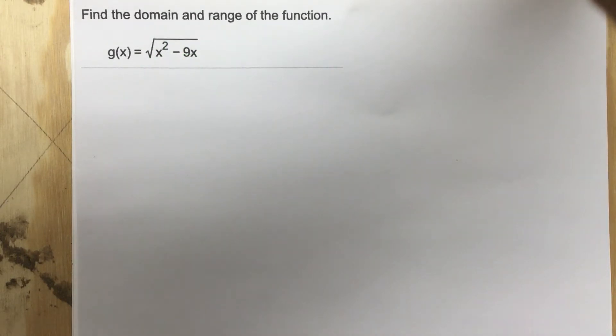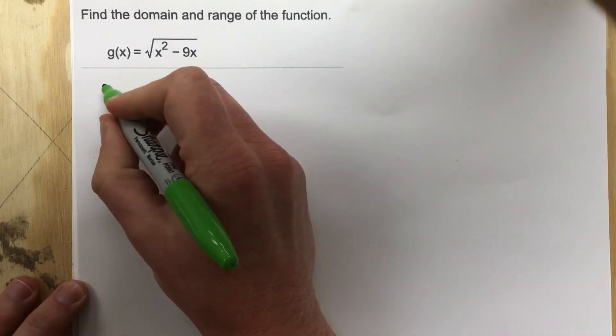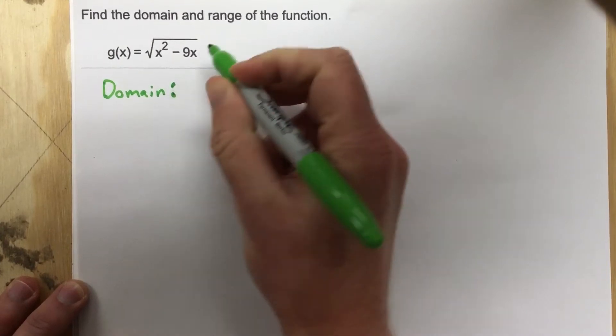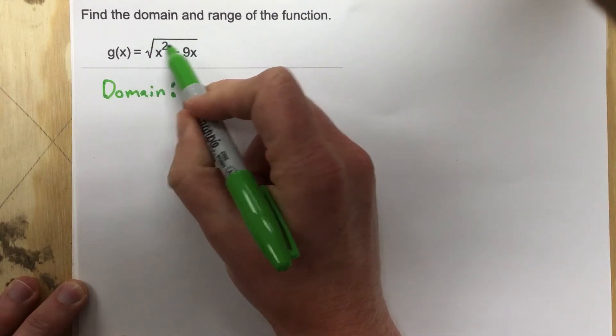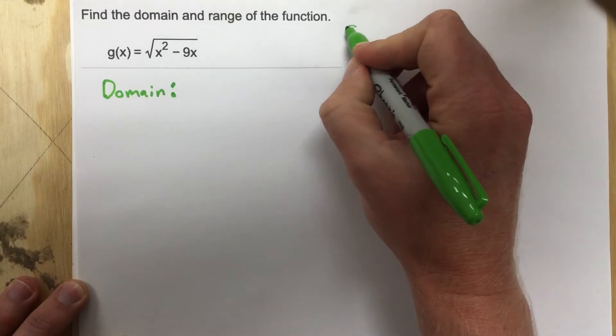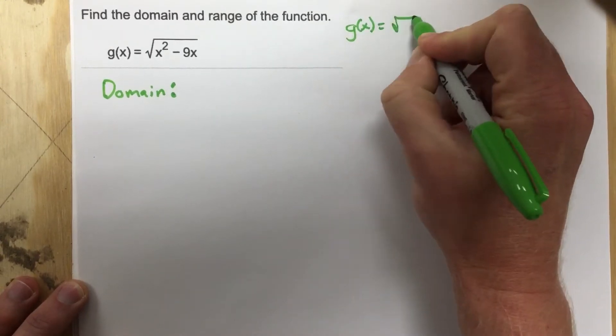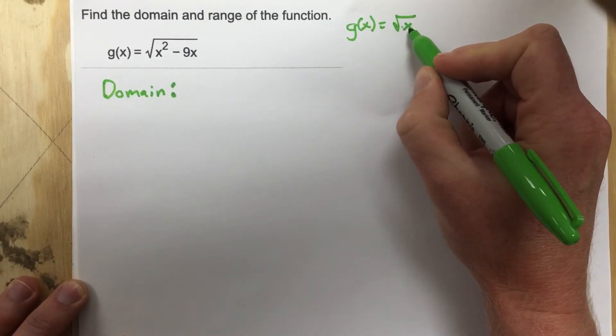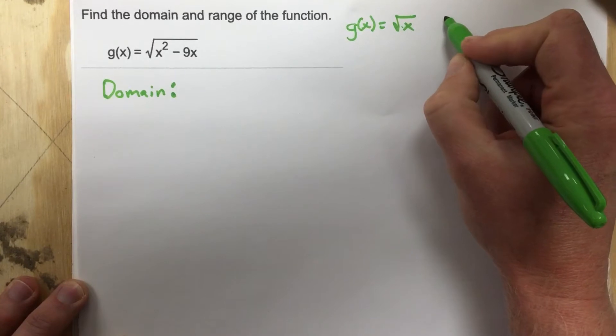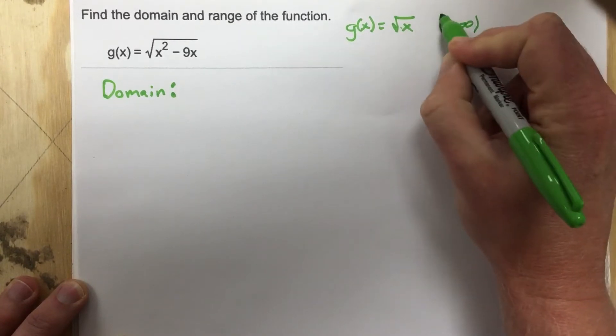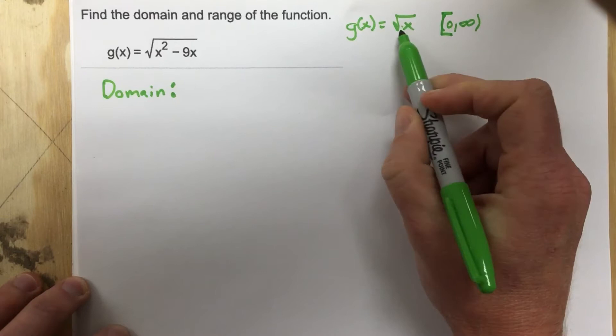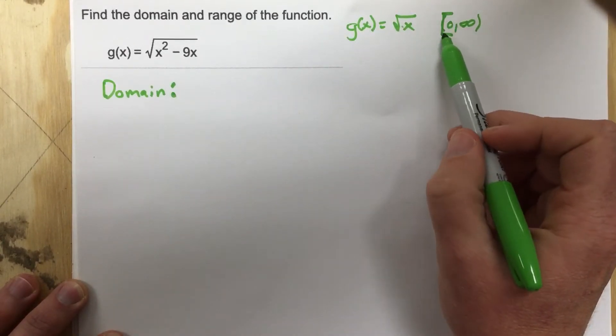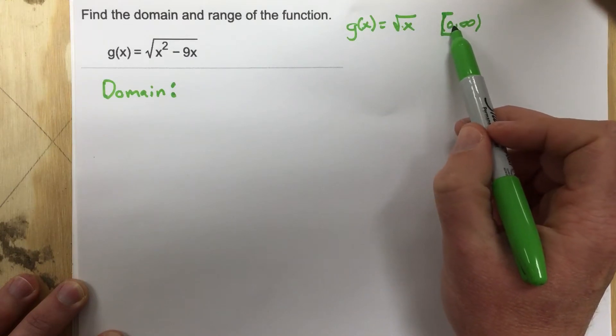If they want us to find the domain we're gonna have to go through and do some solving algebraically to find that. So let's start by talking about the domain of just a normal radical function. So if I have just g of x equal root x, the domain for that function, well I can never take the radical of a negative, so the domain for this function would be zero to infinity. And we did include the zero because zero does work for this radical function. So for a normal radical function we have to have inputs into the radical that are from zero to infinity.